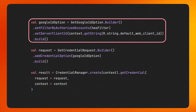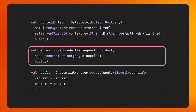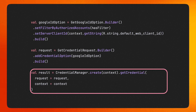To implement the Bottom Sheet UI, first you have to instantiate a Google sign-in request using Get Google ID option, as you see here. Second, instantiate a credential request and add the Get Google ID option. Then pass this request to Get Credential to retrieve the user's available credentials.